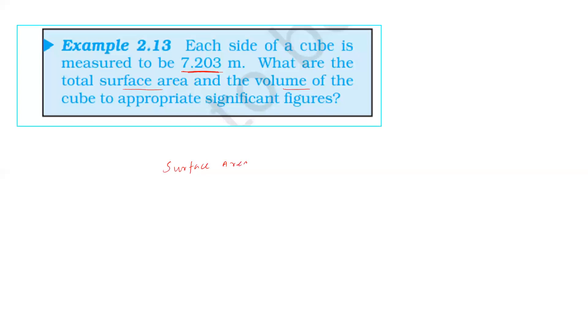Surface area of a cube is 6 times side squared. 6 times 7.203 squared equals 311.3 meter squared. This is 4 significant figures. This is the surface area.